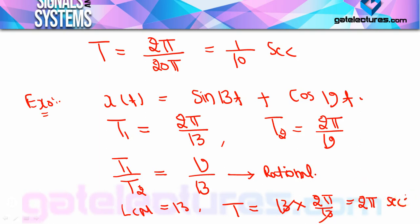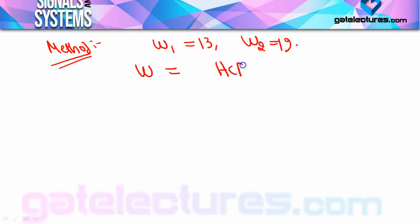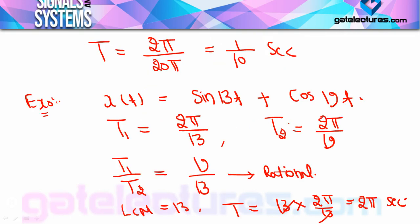Method 2 से verify करें: ω₁ = 13, ω₂ = 19। दोनों में denominator 1 है, LCM = 1। HCF of 13, 19 — common maximum value = 1 (क्योंकि 13 और 19 का कोई common factor नहीं; 1 के अलावा कुछ common नहीं)। Overall ω = 1/1 = 1। Time period = 2π/1 = 2π seconds। Method 1 से भी 2π second ही आया था — answer same है।